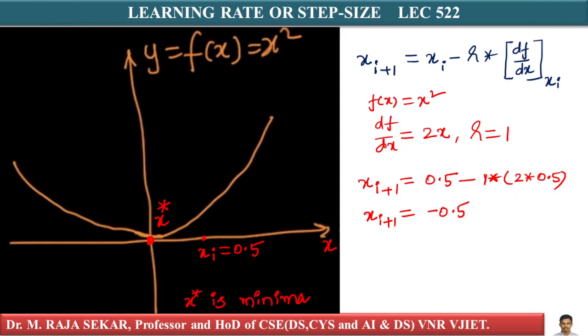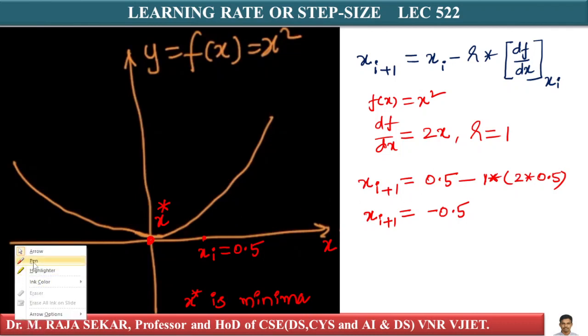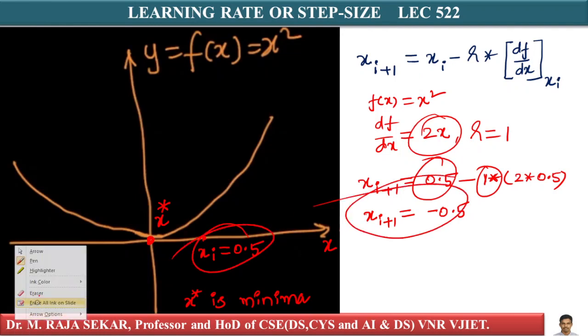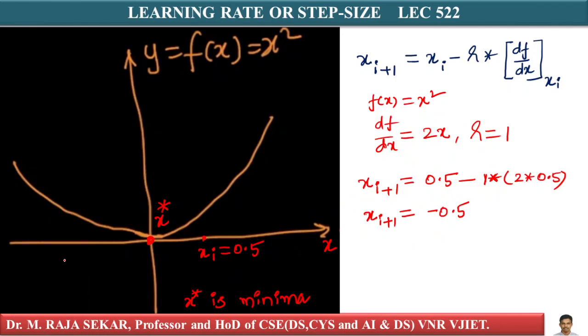What happens to my xi+1? xi+1 = xi - ... what is my xi? xi is 0.5, r is 1, df/dx is 2x at xi. xi is 0.5. Therefore, you are getting xi+1 as -0.5.